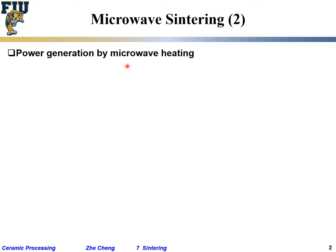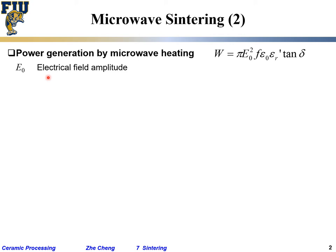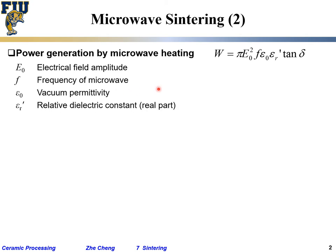For microwave sintering, the power generation is by microwave heating. The power in watts is given by an equation. The parameter E₀ is the electrical field amplitude — essentially how much electrical vibration we are providing. f is the frequency of the microwave. ε₀ is the vacuum permittivity. ε_r is the relative dielectric constant, specifically the real part for that material. tan δ is the loss tangent for the dielectric material.